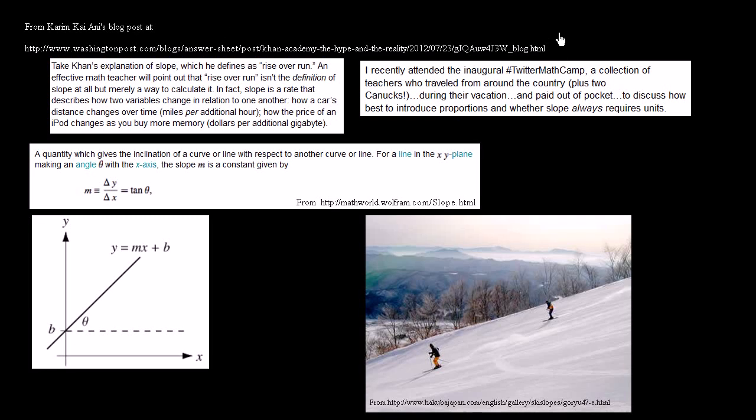There was a recent blog post on the Washington Post about slope and how Khan Academy talks about it. We are big fans of when there is this type of discussion in the public, but the math in the blog post was actually very, very, very wrong.